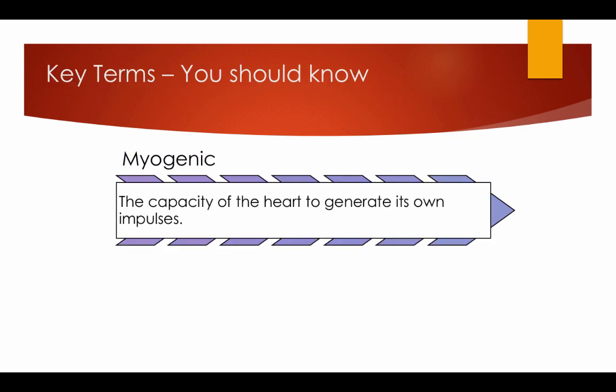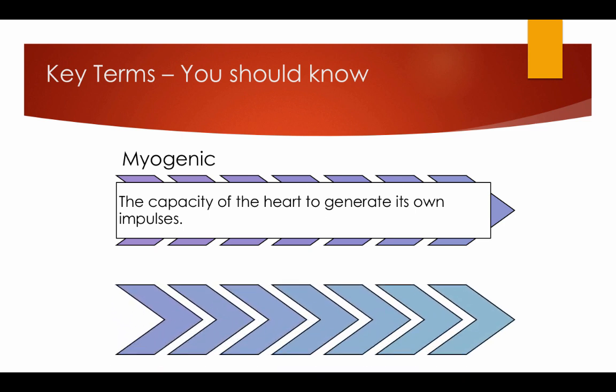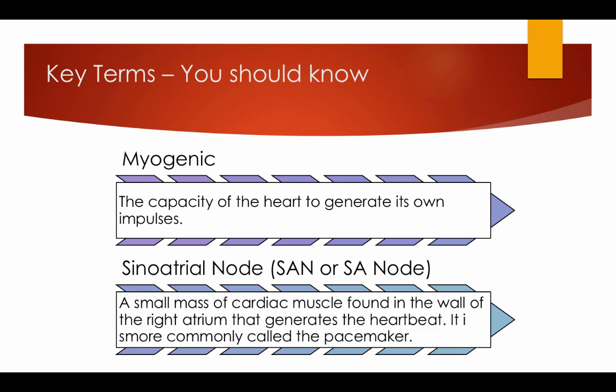Key terms you should know. Myogenic: the capacity of the heart to generate its own impulses. Sinoatrial node, or SAN, or SA node: a small mass of cardiac muscle found in the wall of the right atrium that generates the heartbeat — it is more commonly known as the pacemaker.